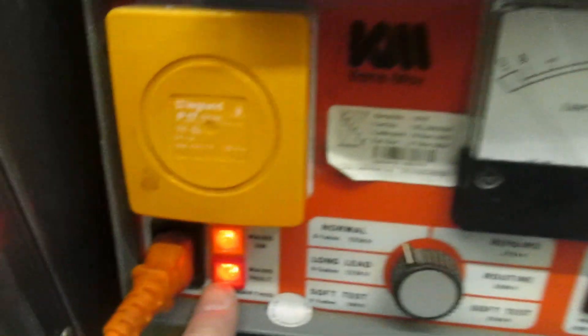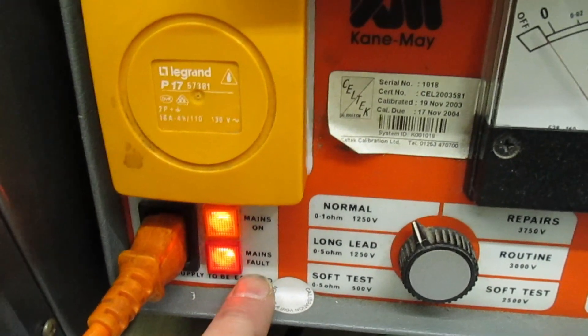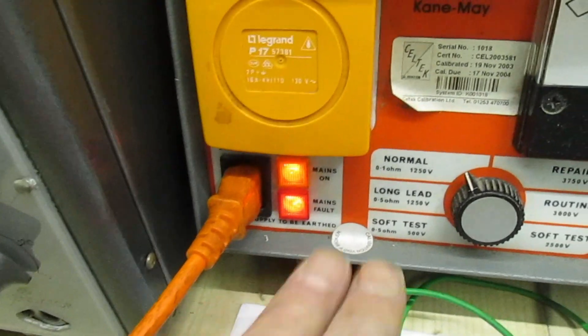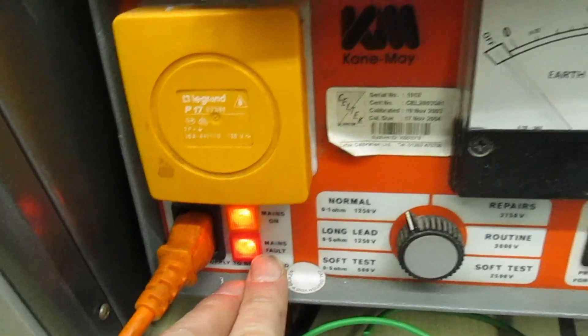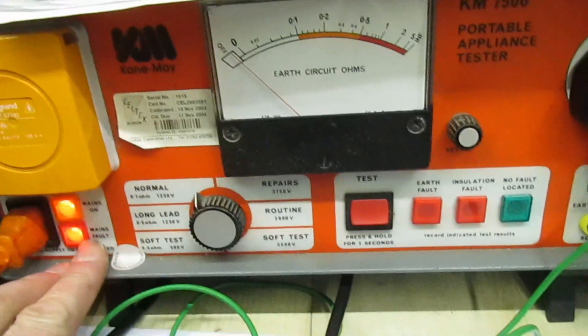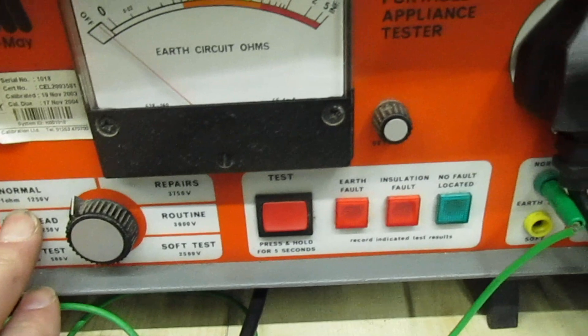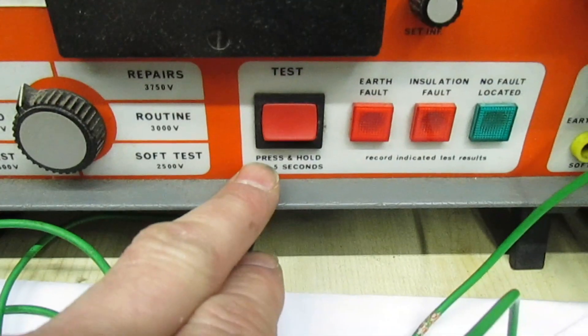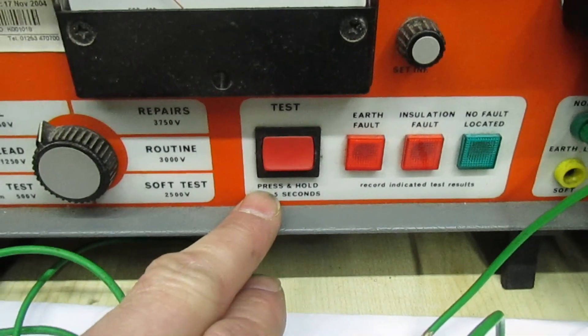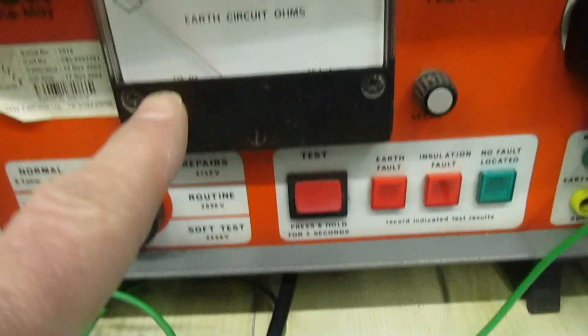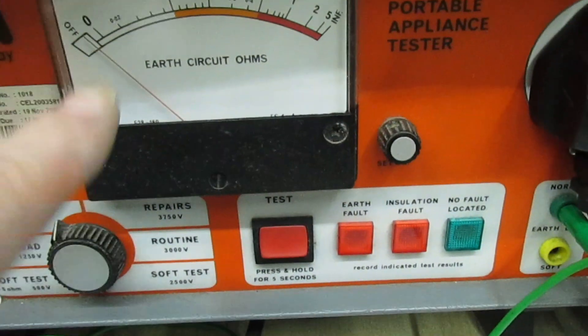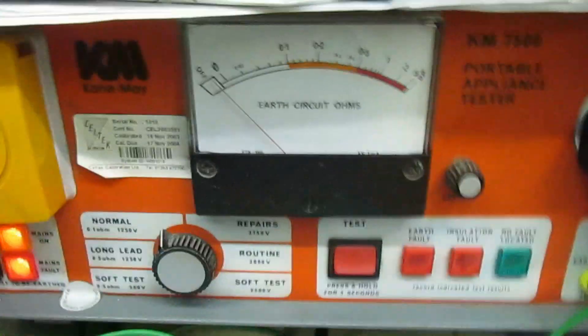So first of all if you notice that it says mains fault, take no notice of that. It's because I'm running from an isolated bench power supply, there's no earth on this equipment now because it comes from an isolating transformer. So the test is I've got it set for 0.1 ohm and you press this button and you hold it for five seconds and that puts 25 amps down the green wire and it measures the voltage drop and that will give you the earth circuit ohms.